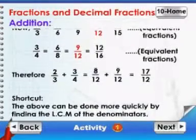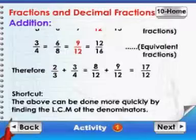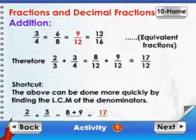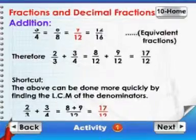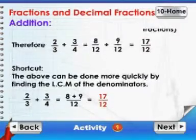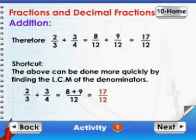Shortcut: The above can be done more quickly by finding the LCM of the denominators. 2 by 3 plus 3 by 4 is equal to 8 plus 9 by 12 which is equal to 17 by 12.